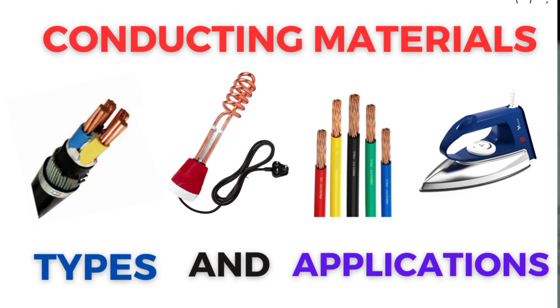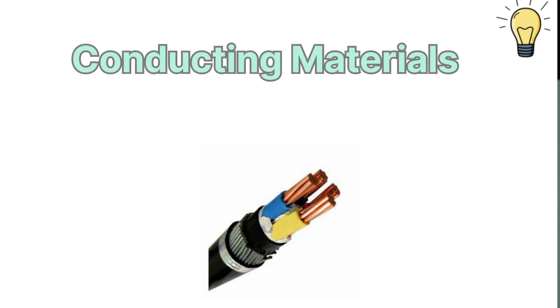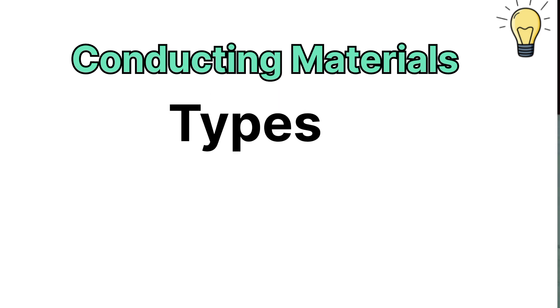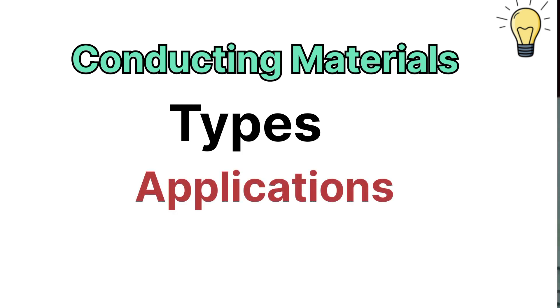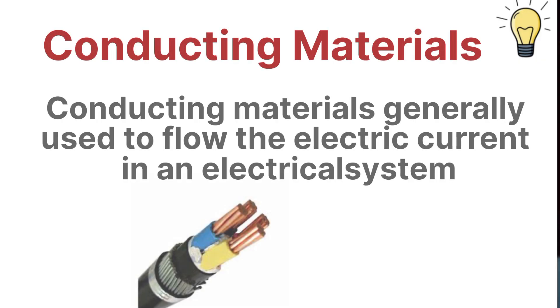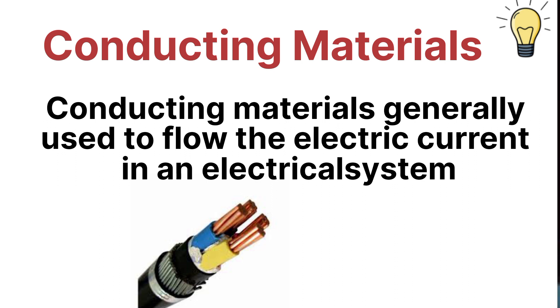Welcome back to another video. In this video we are going to learn about the conducting materials which are very importantly used in electrical systems — what are the conducting materials, what are the types of conducting materials, and also the applications of these conducting materials. The main purpose of conducting materials is to flow the electric current in an electrical system.